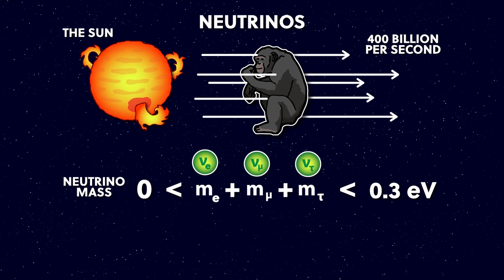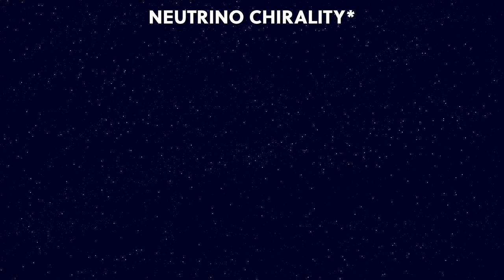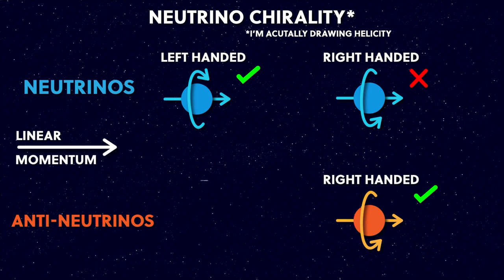We don't know what the neutrino mass is and it's still being investigated, but we know it's greater than zero, and the sum of all three neutrino masses must be less than 0.3 electron volts. Because they have mass, neutrinos can oscillate between the different lepton flavours. For example, electron neutrinos produced by beta decay have been observed to have a different flavour when measured in a distant detector. Another mysterious property of neutrinos is to do with their chirality — basically whether they're left-handed or right-handed. We've observed left-handed or right-handed versions of every other particle, but with neutrinos we've only ever observed them to be left-handed, never right-handed. And for anti-neutrinos, we've only ever seen right-handed anti-neutrinos.